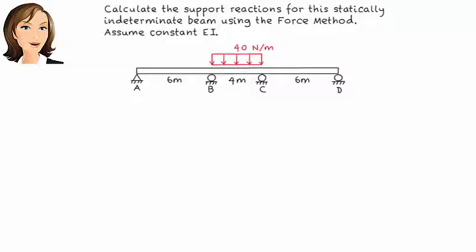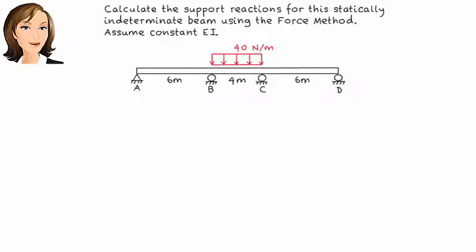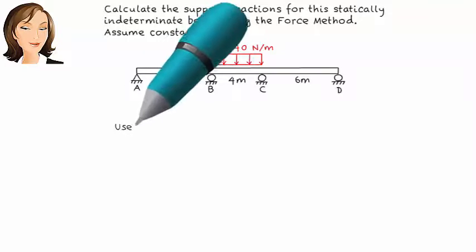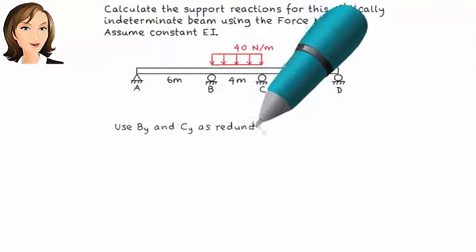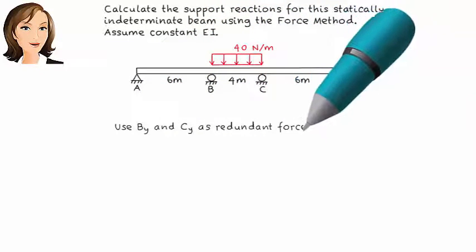Here we have a statically indeterminate beam subjected to a distributed load. We wish to analyze it using the force method. The beam has a degree of indeterminacy of two, so we need to pick two of the reactions as redundant forces. Let's make the vertical support reactions at B and C redundant.